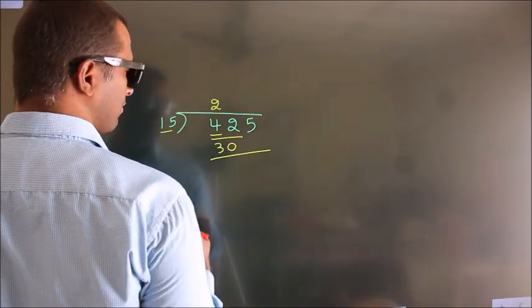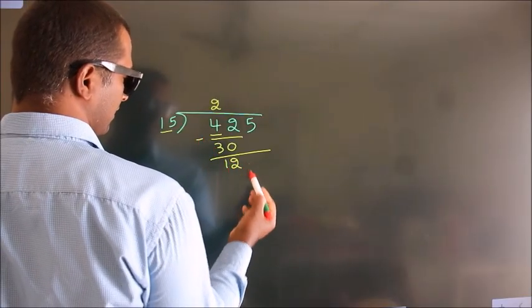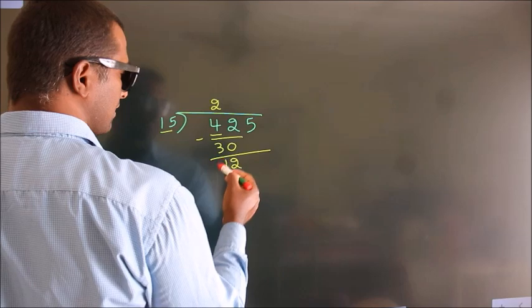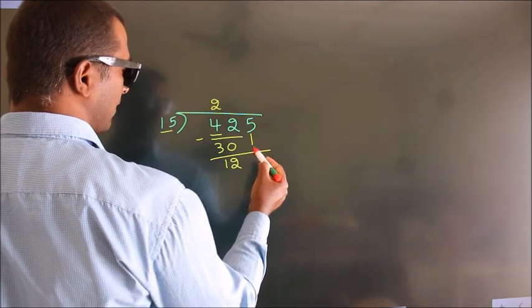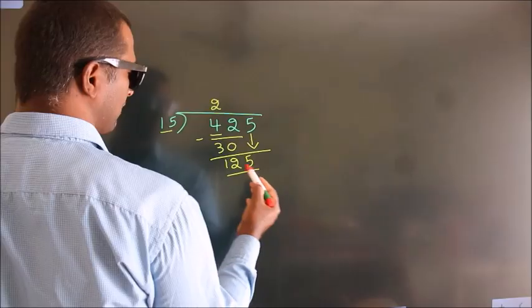Now we subtract. We get 12. After this, bring down the next number. So 5 comes down, giving us 125.